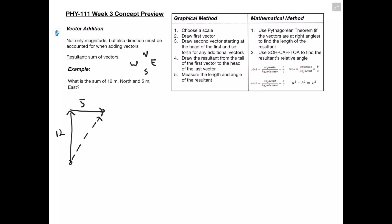We're going to use the mathematical method. We can see that this forms a triangle, so we'll use both the Pythagorean theorem and SOH-CAH-TOA to find magnitude and direction. Using the Pythagorean theorem — a² + b² = c² — we take both side lengths, square them, and add them. Our resultant is the hypotenuse, so we write 5² + 12² = c², which gives us c = 13 meters as our magnitude.